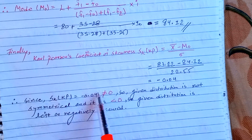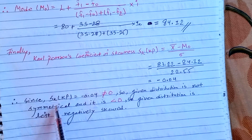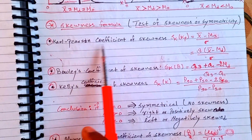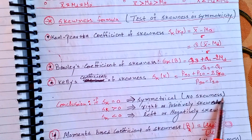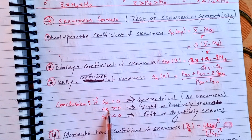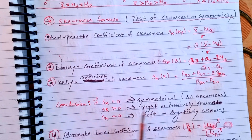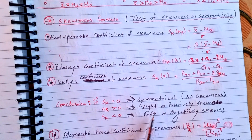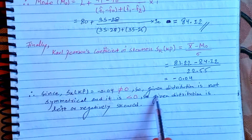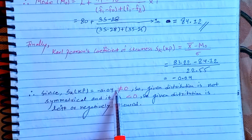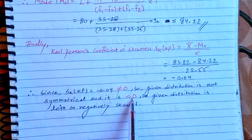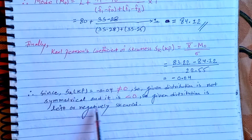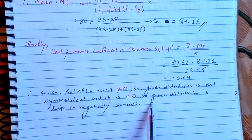Since SK = -0.04, which does not equal 0, the given distribution is not symmetrical. If SK equals 0, the distribution would be symmetrical. Since SK is less than 0, the given distribution is left or negatively skewed. Therefore, the distribution is a left or negatively skewed distribution.